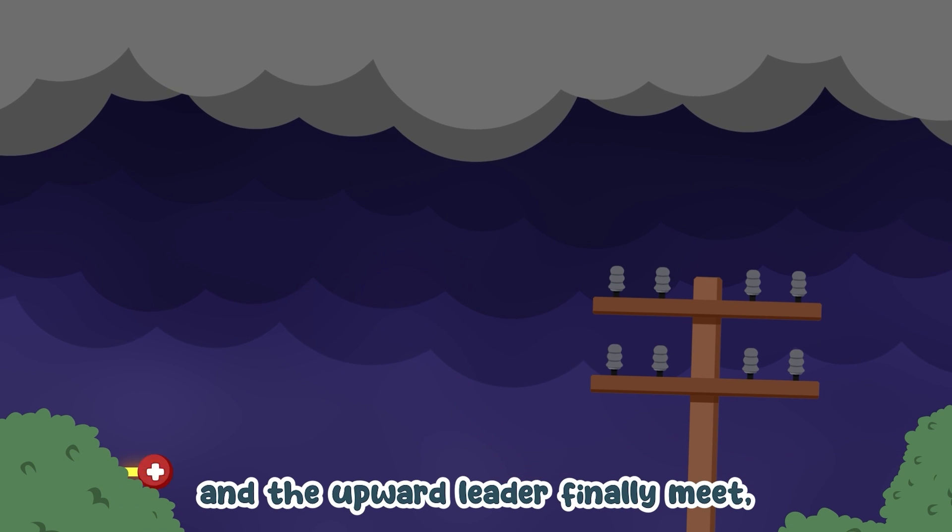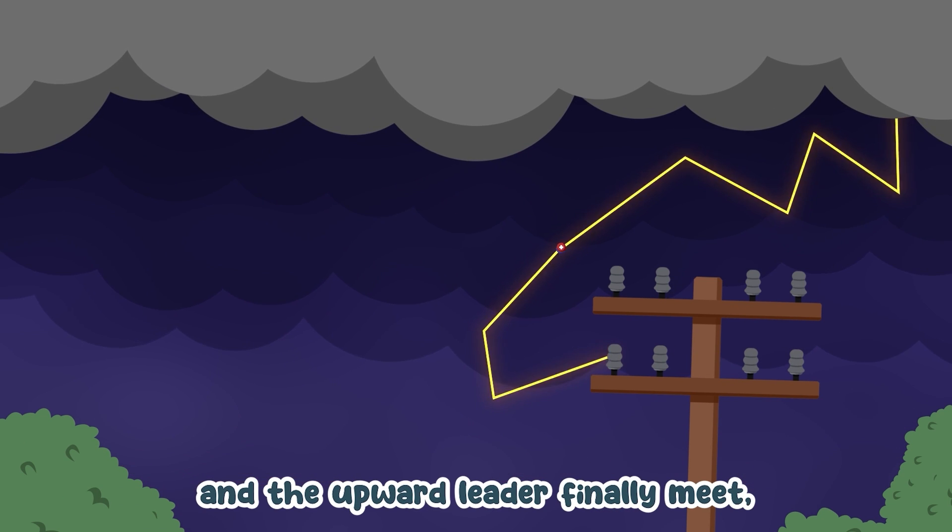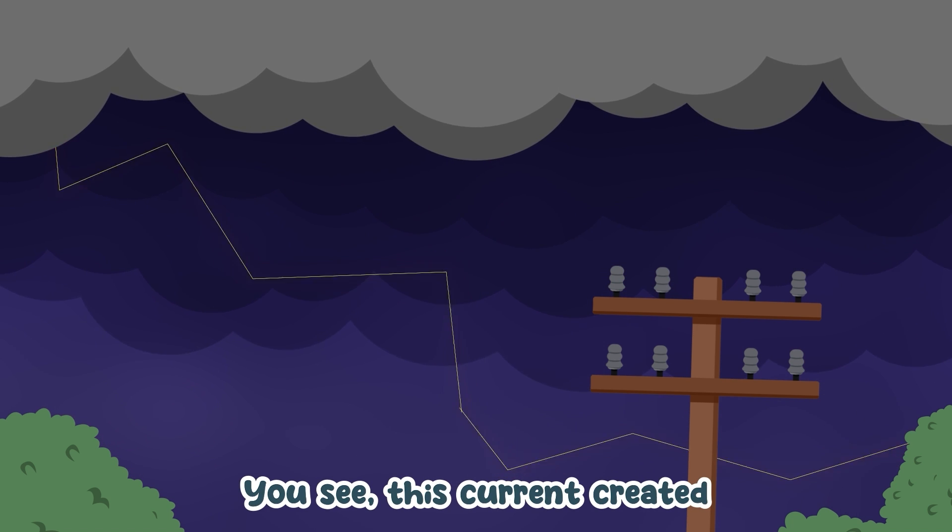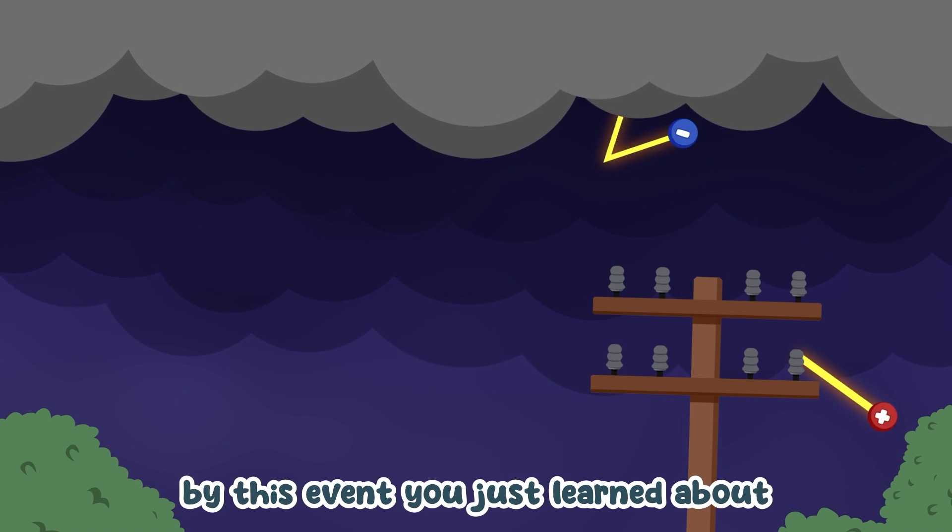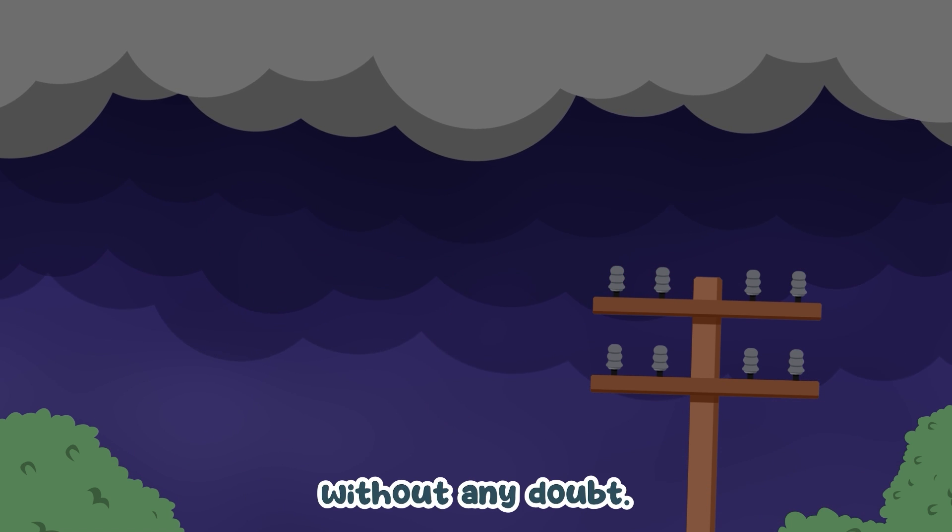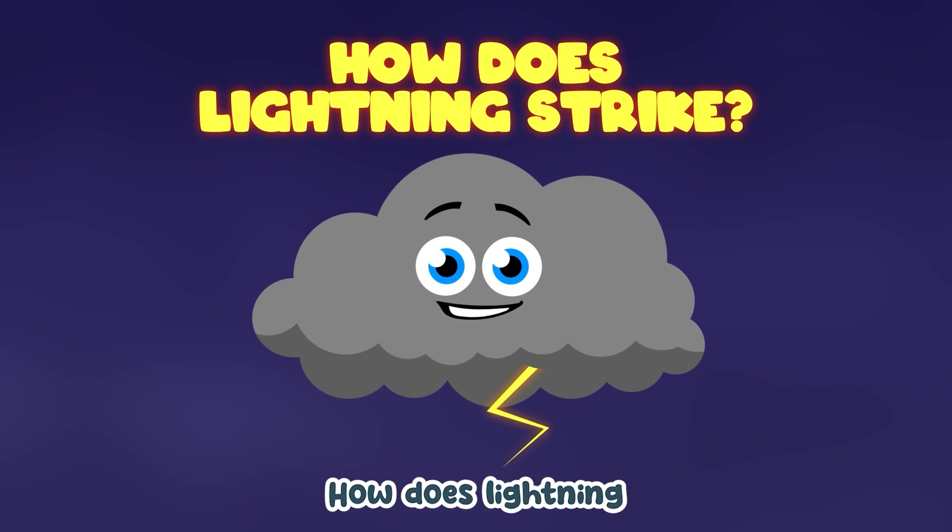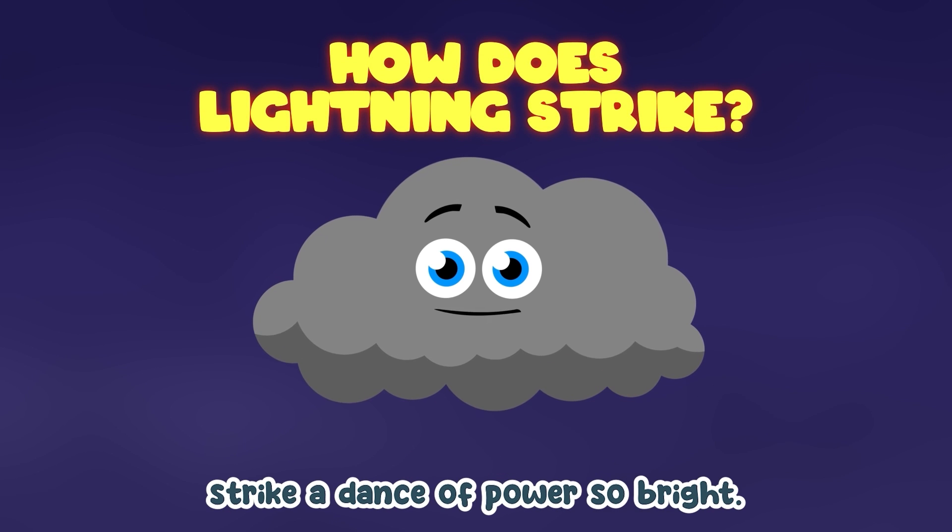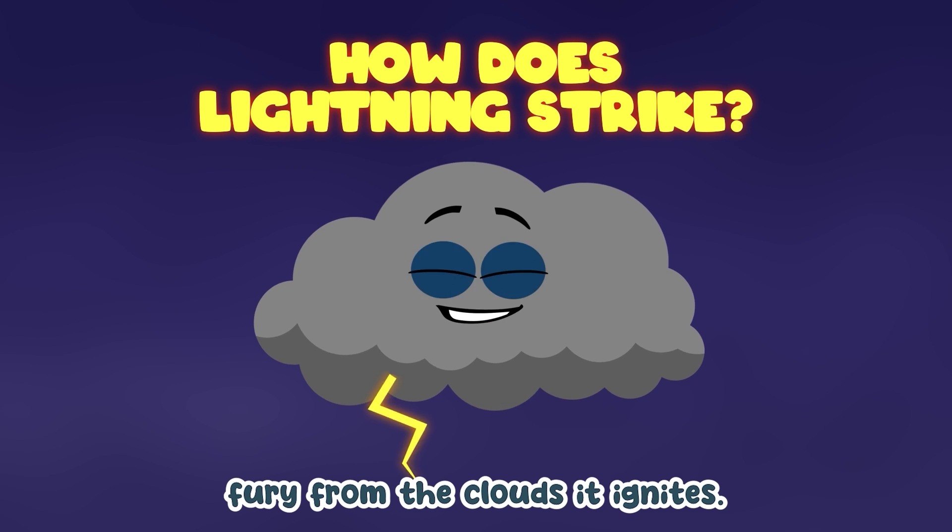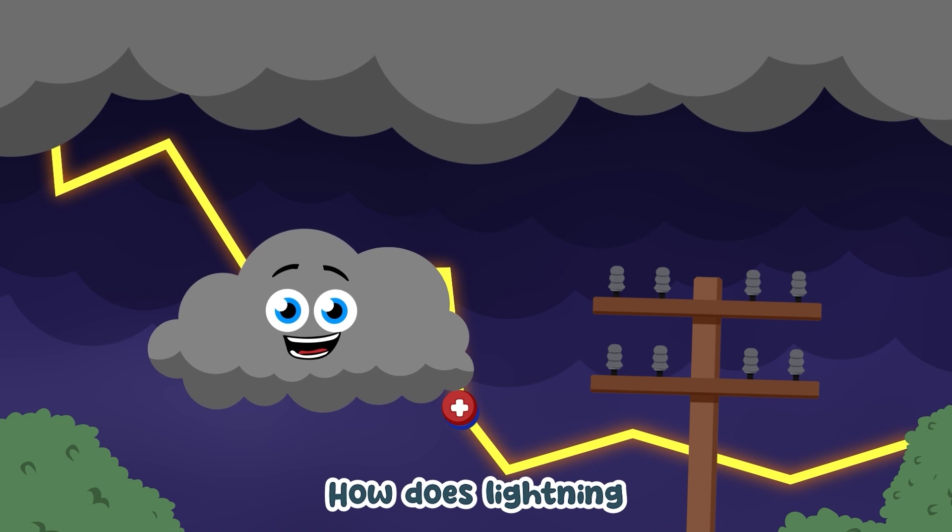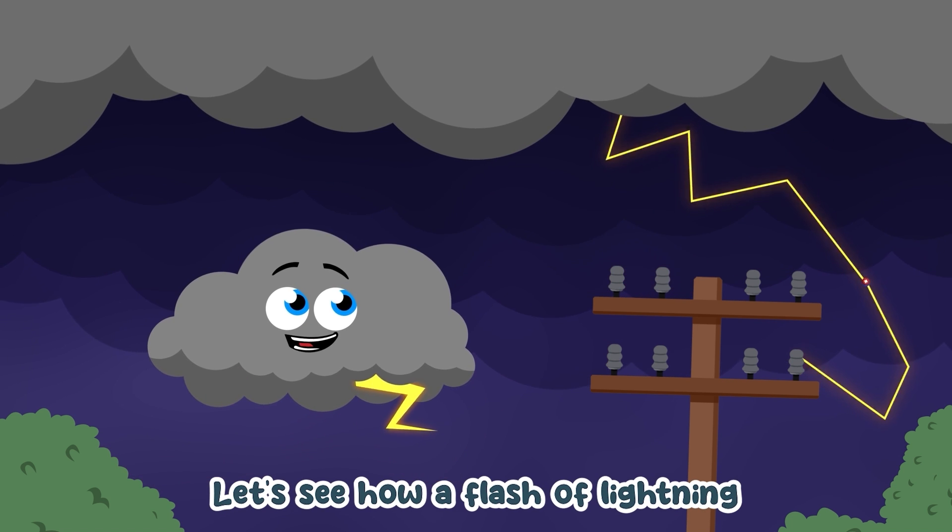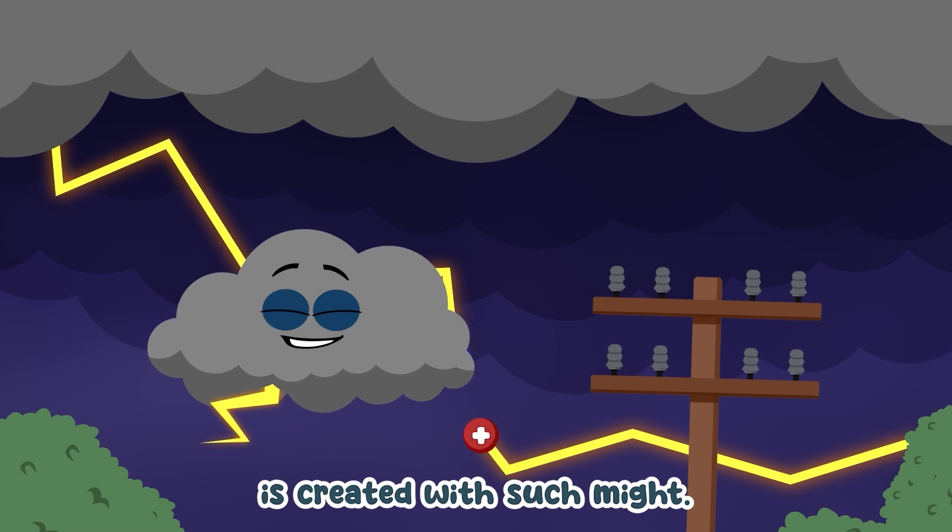Let's see how a flash of lightning is created with such might. When the stepped leader and the upward leader finally meet, it creates a path for the large electrical current you see. This current created by this event you just learned about is the thing we call lightning without any doubt.